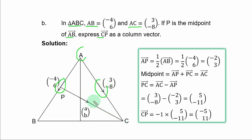And PC, this is the direction. Now you are asked to express CP, vector CP, as a column vector. But by this direction, we can only get vector PC. And once we get vector PC, we can get vector CP.